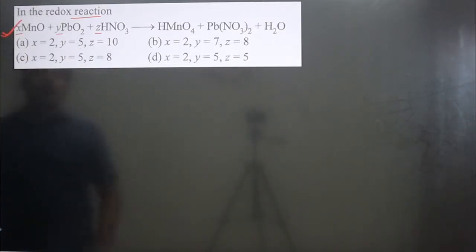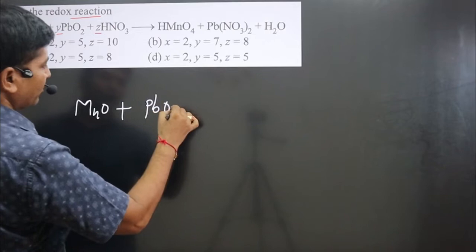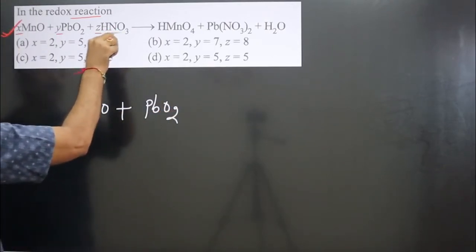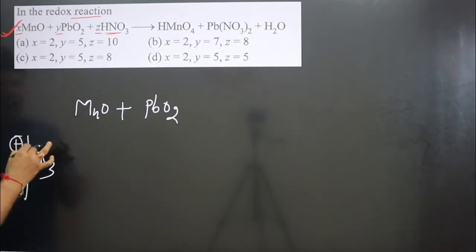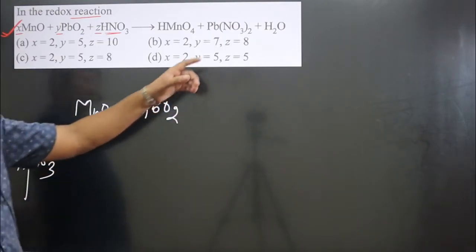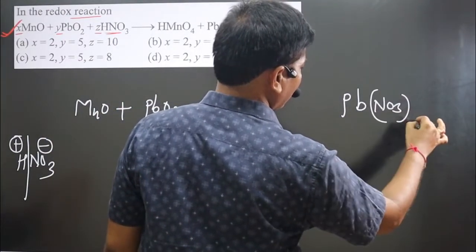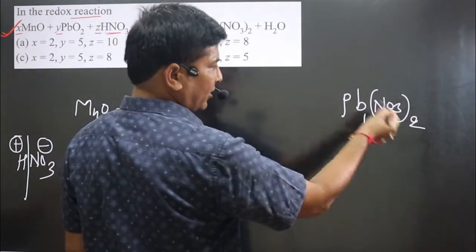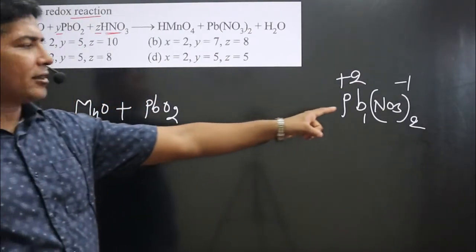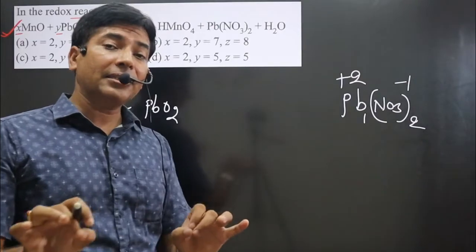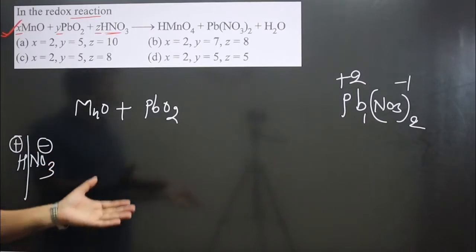We have MnO, then we have PbO2, and nitric acid HNO3. If you break it, we have H+ and nitrate ion. On the other side, we have lead nitrate Pb(NO3)2 — one lead and two nitrate ions. Since nitrate ions are present on both sides, we can consider them as spectator ions and exclude them from balancing for now.